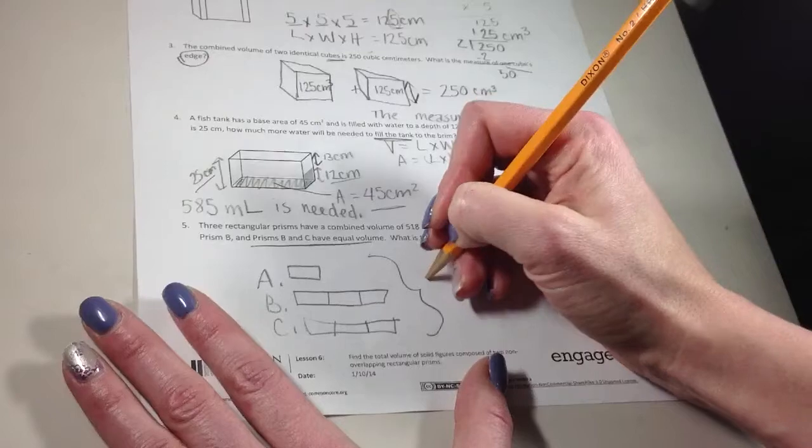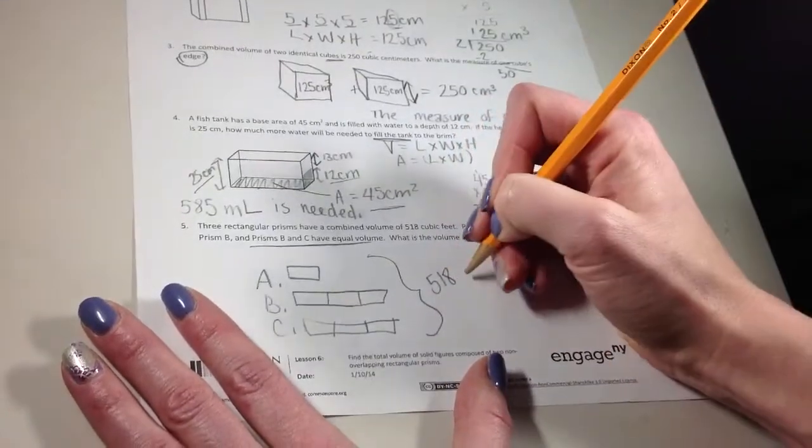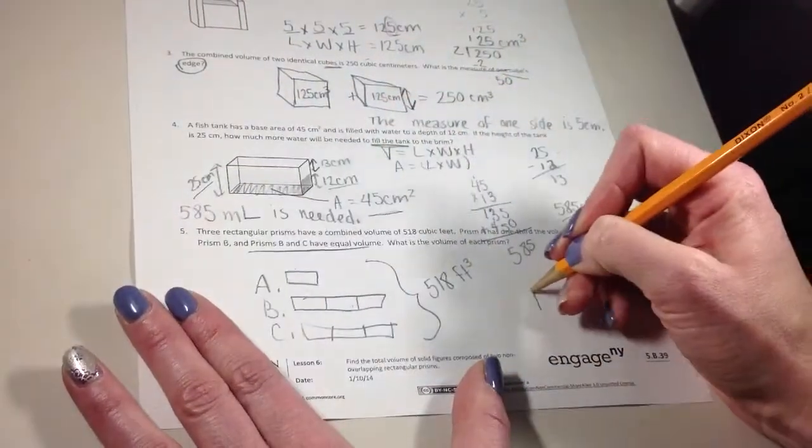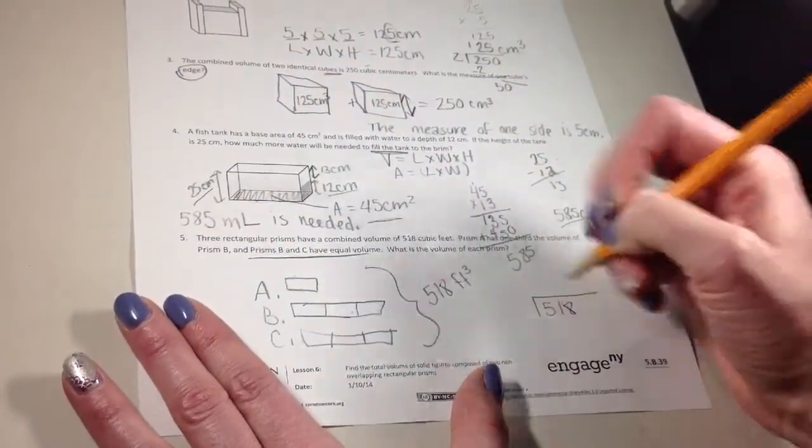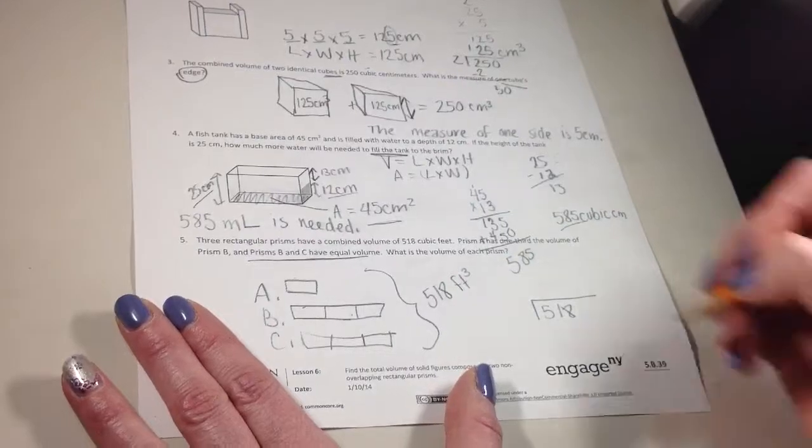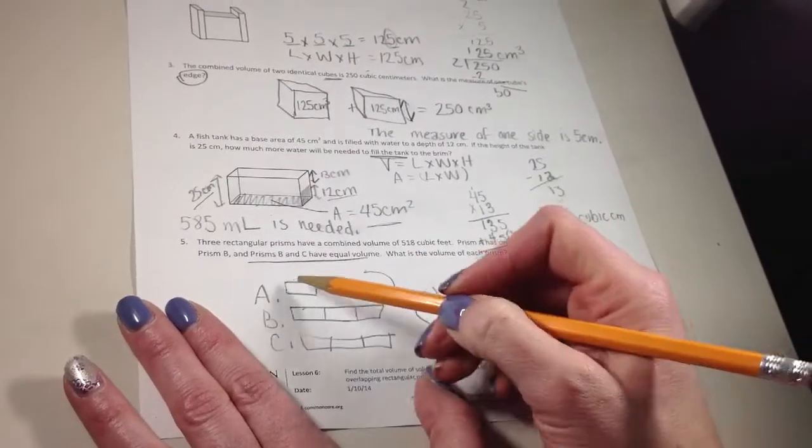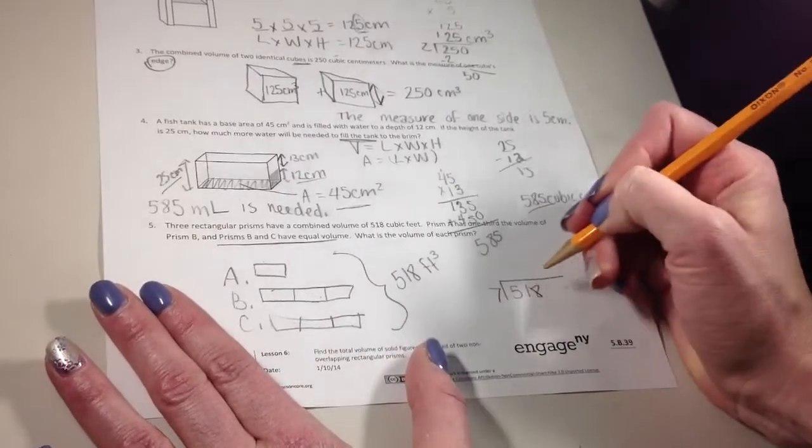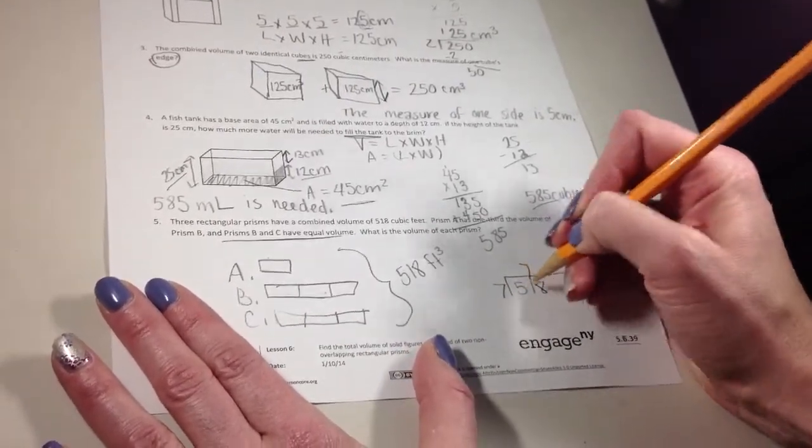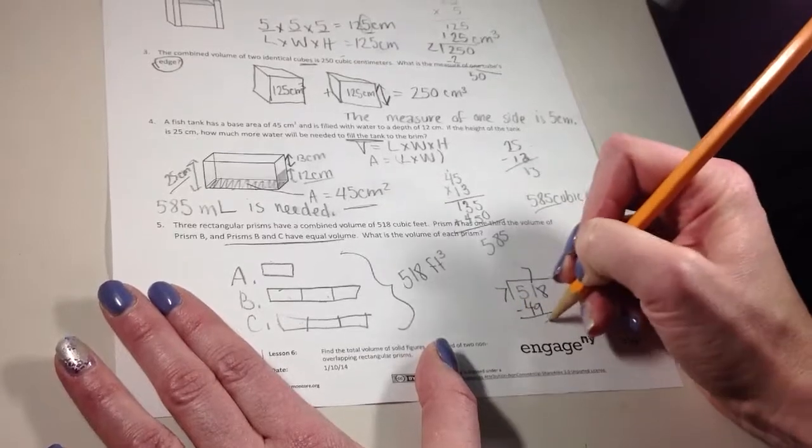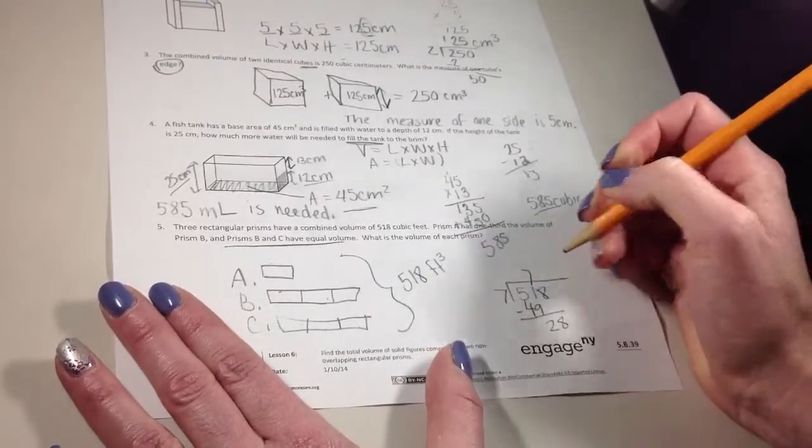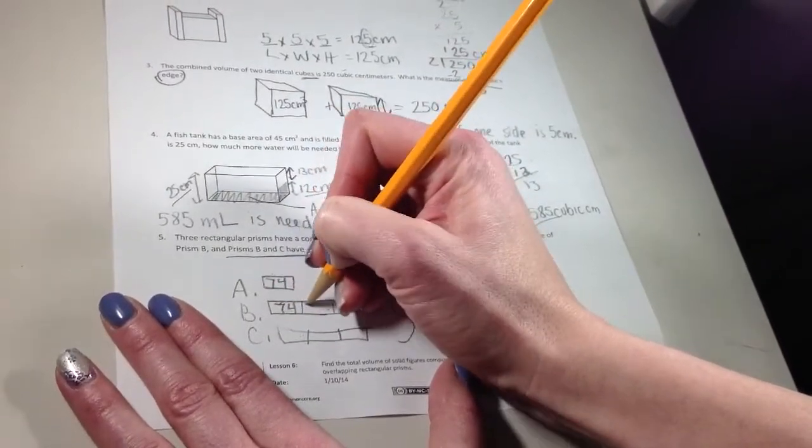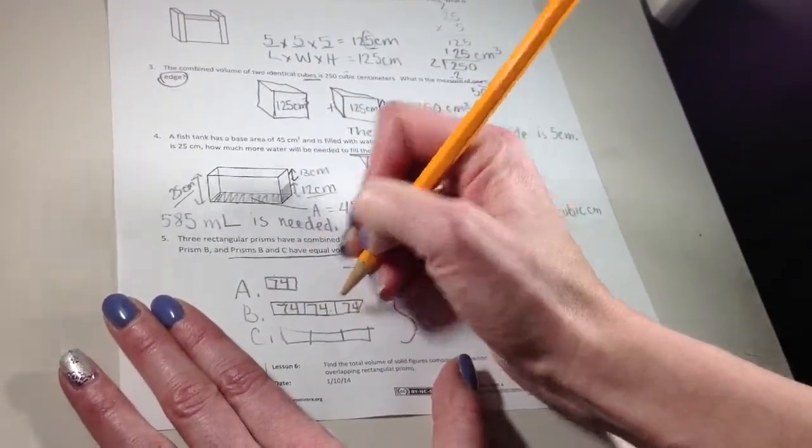So I end up with a picture that shows me seven equal pieces. I know all together I have 518 cubic feet. I want to figure out what each little piece is. So I'm going to take the 518. Because I know all these pieces are equal, I can divide them. There's seven pieces. One, two, three, four, five, six, seven. Seven will go into 51 seven times. Seven will go into 28 four times. So I know each of these little pieces is 74. And now I can answer the question.